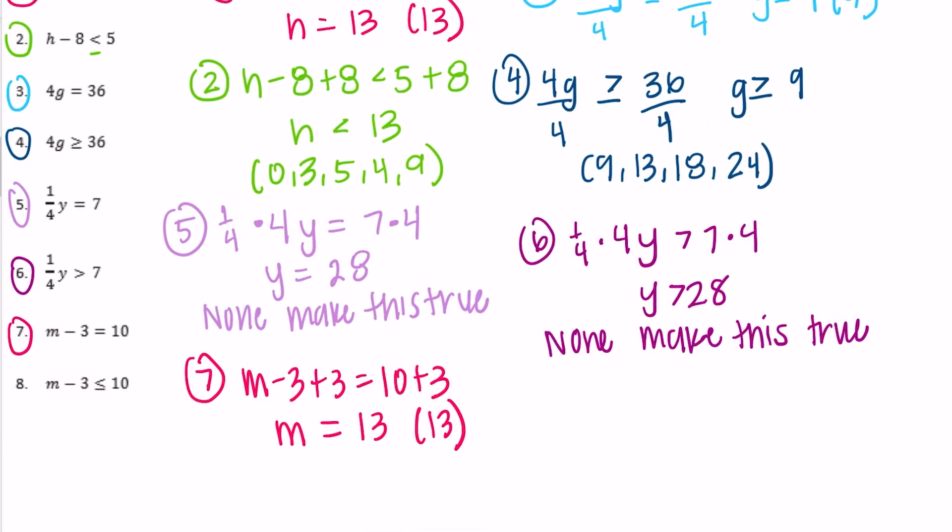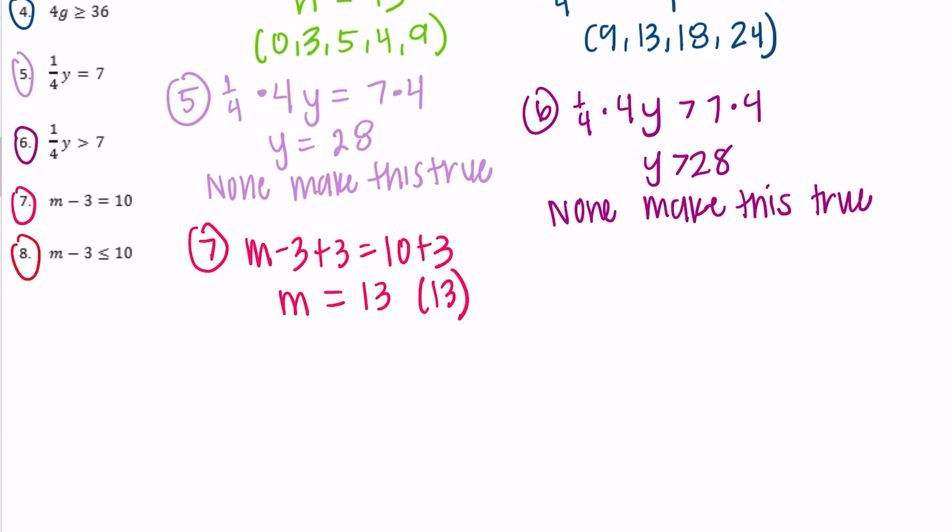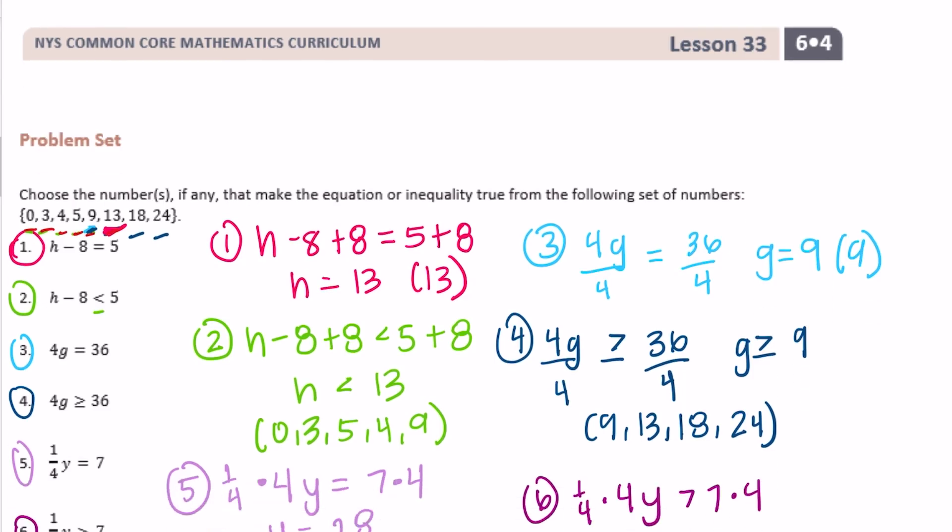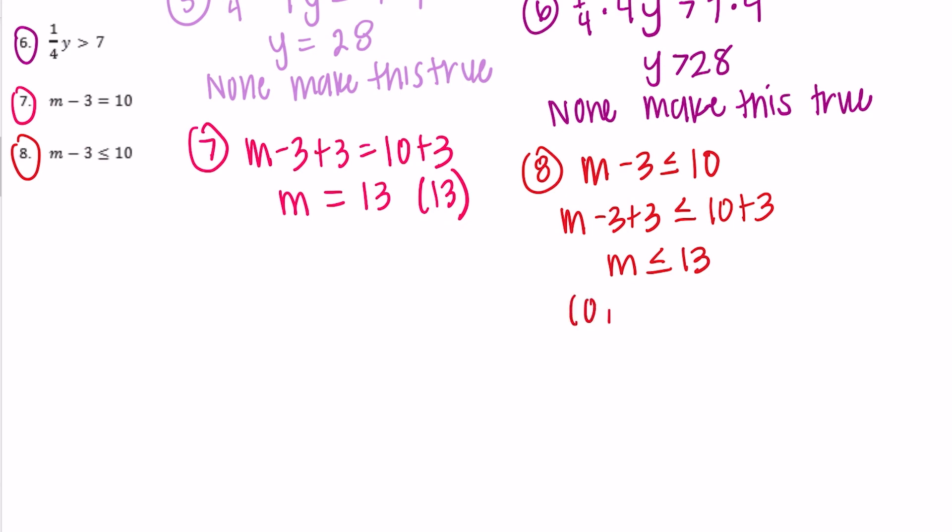Number 8, the last one. m minus 3 is less than or equal to 10, so m minus 3 plus 3 is less than or equal to 10 plus 3. So m must be less than or equal to 13. Anything less than or equal to 13 would be 0, 3, 4, 5, 9, and it's less than or equal to, so we're going to include 13. So that was 0, 3, 4, 5, 9, and 13.